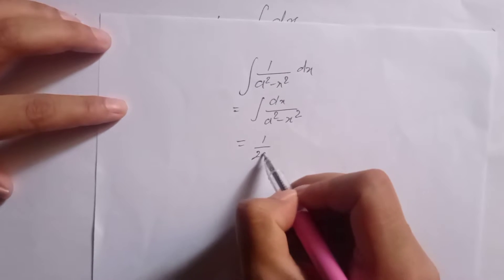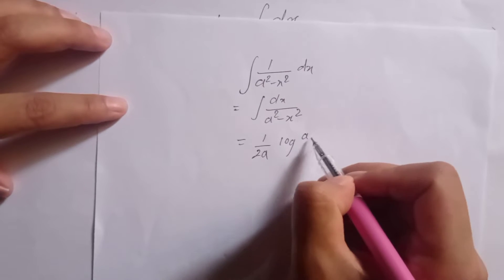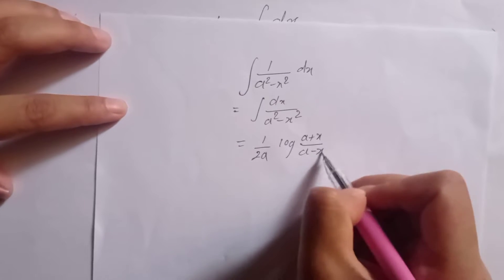This is the direct formula: 1 by 2a log a plus x by a minus x plus c.